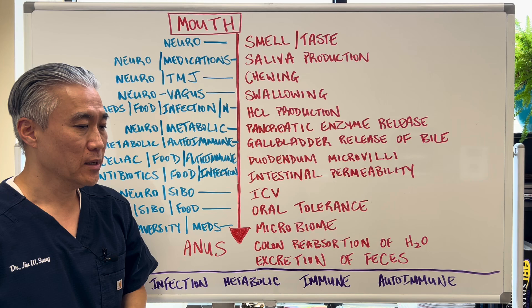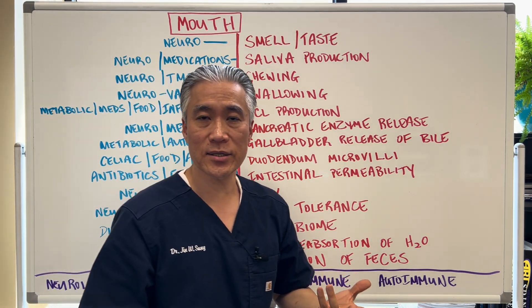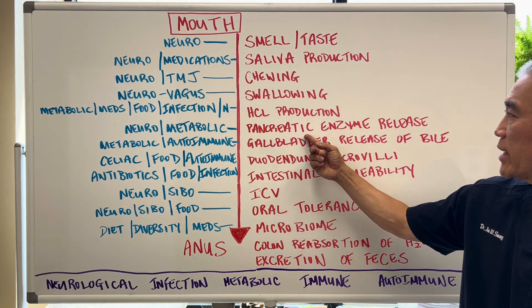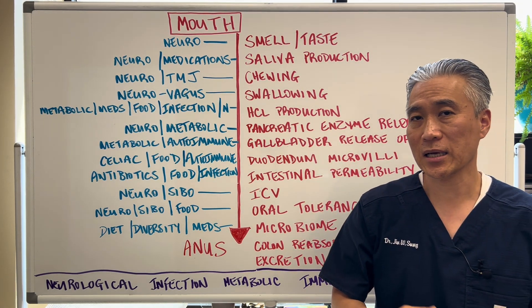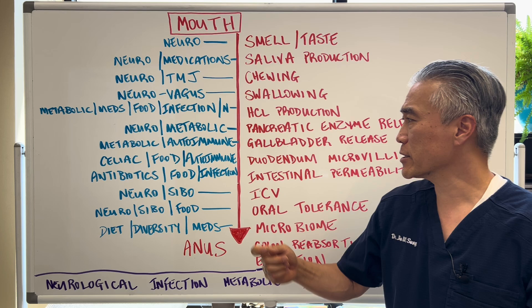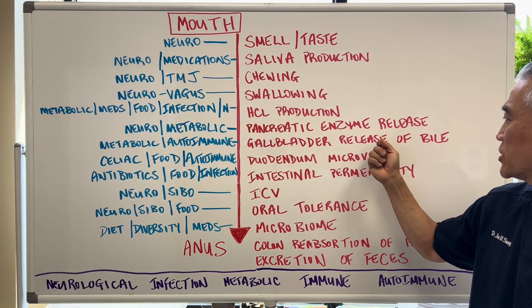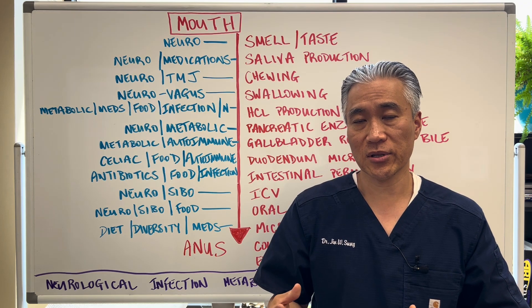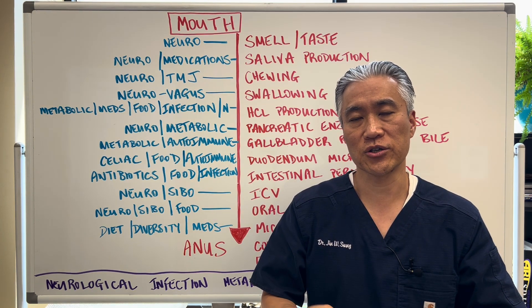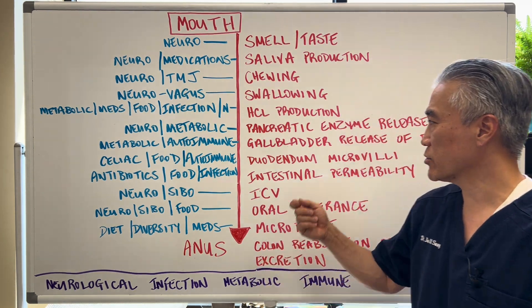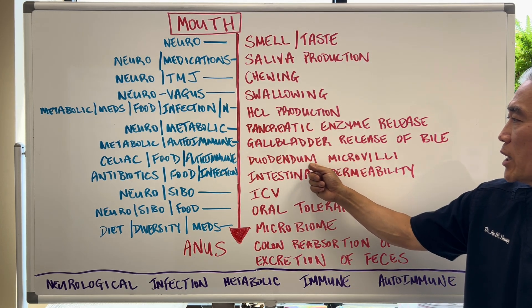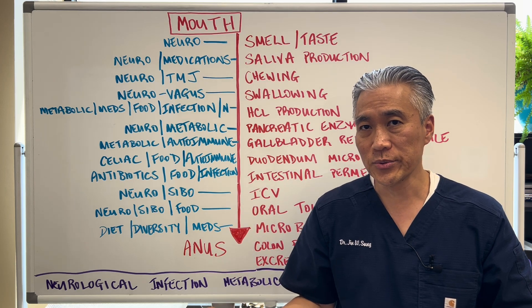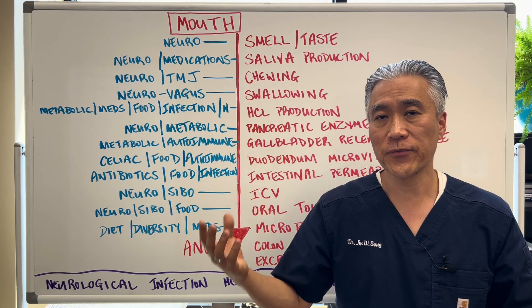HCL production can be influenced by metabolic conditions or by infection. Pancreatic enzyme release is another one — that can be neurodegenerative and metabolic. Gallbladder release of bile can involve gallbladder sludge, insufficient contraction, or sometimes autoimmune disease. Duodenal microvilli blunting can be related to autoimmune disease or food reactions.